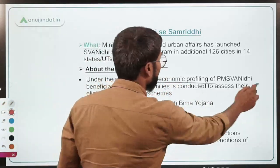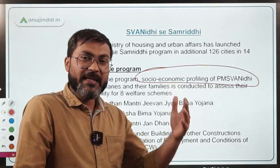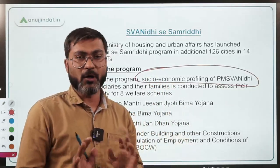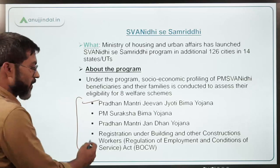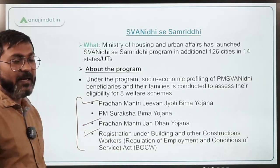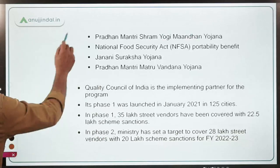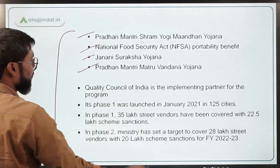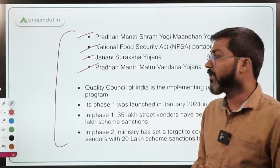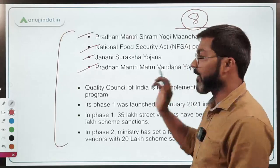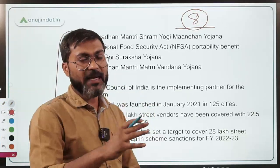Socio-economic profiling of PM Swanidhi beneficiaries and their dependents is conducted, and thereafter their eligibility for eight welfare schemes is finalized. These eight schemes are: PM Jeevan Jyoti Bima Yojana, Suraksha Bima Yojana, Jan Dhan Yojana, registration under Building and Other Construction Workers Act, Shram Yogi Mandhan, National Food Security Act, Jan Dhan Suraksha Yojana, and PM Matru Vandana Yojana. You don't need to memorize all eight names — just remember the program links PM Swanidhi beneficiaries to eight welfare schemes. Phase one was in 2021 and phase two has recently been launched.